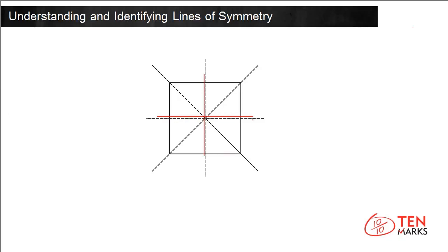You can also fold a square diagonally along each diagonal and get the same result. So a square has line symmetry. There are four lines of symmetry for a square.